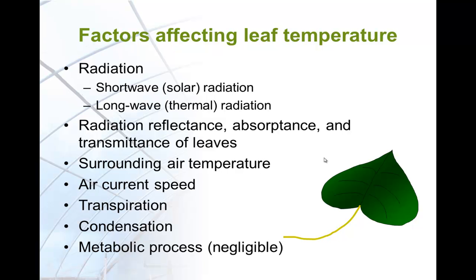Factors affecting energy balance and therefore leaf temperature are shown in this slide. First, the most influential factor is radiation. There are two different kinds of radiation to consider: the first is solar radiation, also called short-wave radiation; the other is long-wave radiation, sometimes called thermal radiation. The second factor is the optical properties of the leaf, such as reflectance, absorbance, and transmittance. Air temperature does have an effect on leaf temperature. Other factors include air current speed, transpiration, condensation over the leaf, and metabolic processes — which are often negligible because of the low level of heat generated.